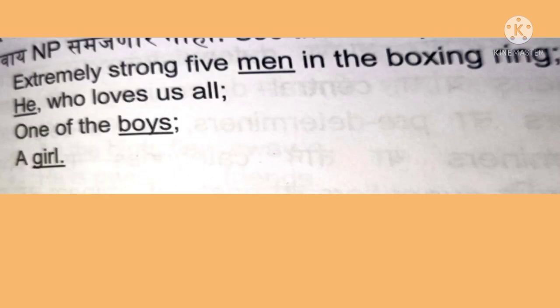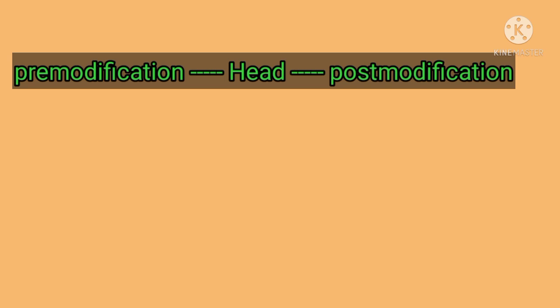To understand and analyze a noun phrase, it is essential to locate the head first. Once the head is located, it becomes easy to identify and analyze the phrase. The words preceding the head are called pre-modifiers and those following are post-modifiers. For example, in 'extremely strong five men in the boxing ring,' 'he who loves us all,' and 'one of the boys and a girl' — men, he, boys, and girl are the respective heads of those noun phrases.